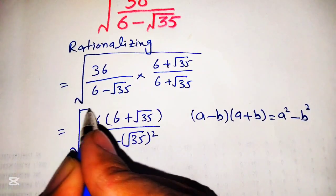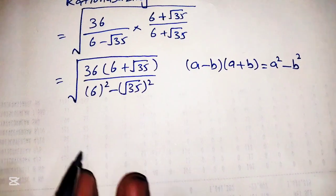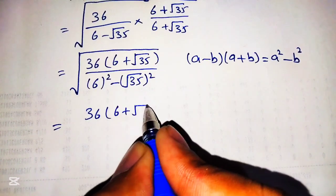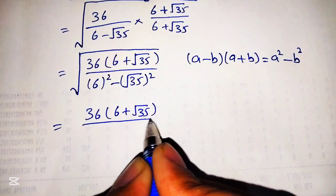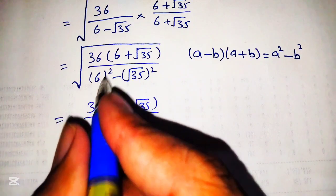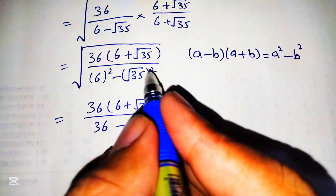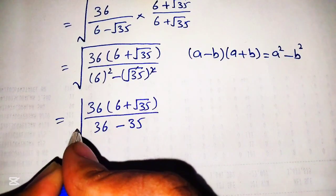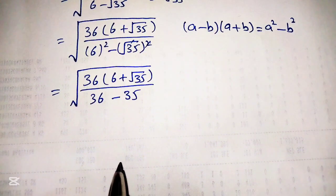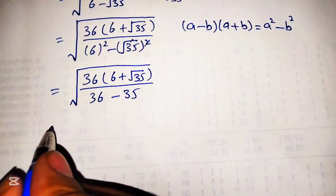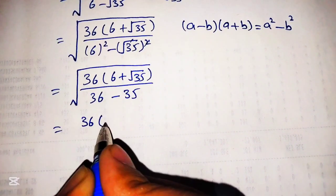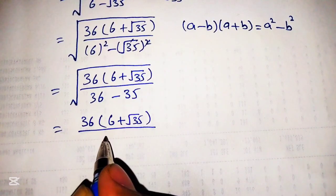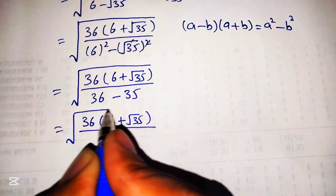Simplifying this equation, we rewrite it as 36 times 6 plus square root of 35 over the denominator. Six squared becomes 36, and the square cancels with the square root, giving us 35. So the denominator becomes 36 minus 35, which equals 1, all under the square root.